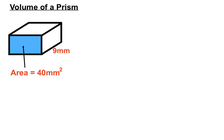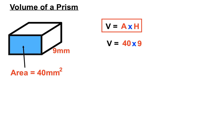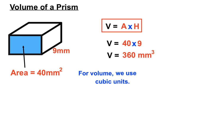This is a rectangular prism. If we know the area of that blue end face, we just multiply it by how far back it goes to get to the other end. The volume is the area they gave us — 40 — times the height of 9. Four nines are 36, so 360 is our number. We're using cubic units, so our answer is 360 millimetres cubed.